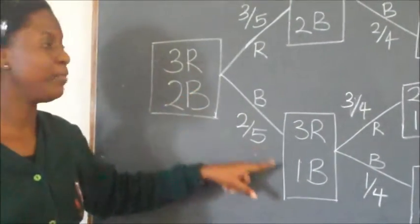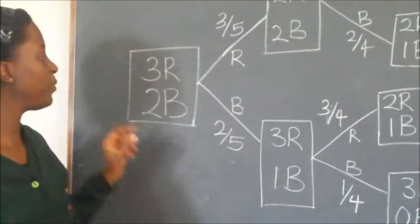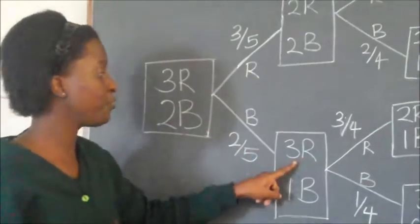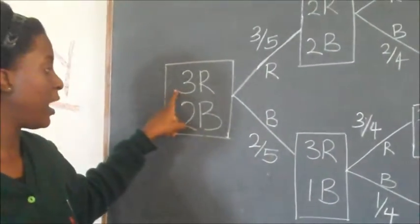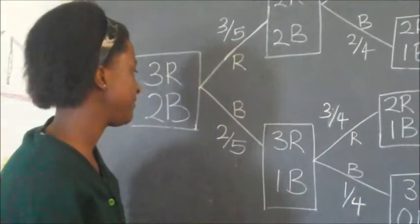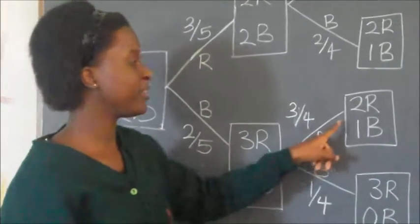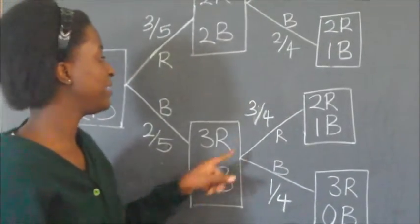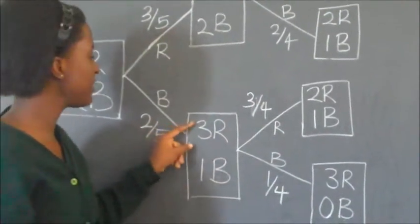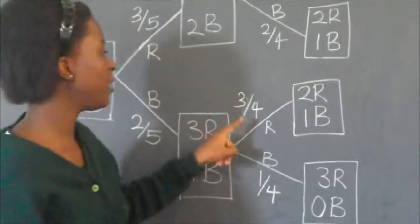From the beginning, we could instead pick a blue sleeper. The probability will be two out of five, because there are two blue sleepers and five sleepers in total. We remain with three red sleepers, but the blue reduces by one, so one blue remains because we have not replaced it. On the second picking, we could pick a red sleeper. The probability of picking a red sleeper is three out of four, because there are three red sleepers and one blue sleeper, meaning four in total. So it's three out of four.